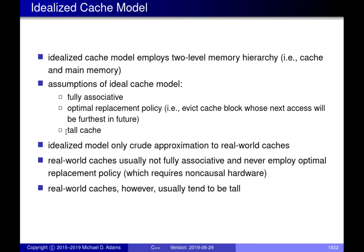The third assumption is that the cache is tall. Now this idealized model is only a very crude approximation to real-world caches. The assumption that the cache is fully associative is not completely realistic, since real-world caches tend not to be fully associative — usually they're K-way set associative for some relatively small value of K. The assumption of an optimal replacement policy is clearly very questionable because it requires non-causal hardware. It's not physically realizable because it would require predicting the future. The assumption that the cache is tall, however, real-world caches often tend to satisfy this requirement, so it's not such a bad assumption.